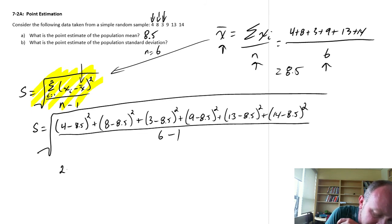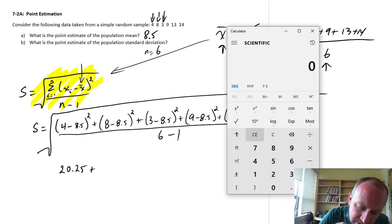So this first one, it's 20 and a quarter, I think, right? Not 2 and a quarter. 20 and a quarter. And then the next one, 8 minus 8.5 squared.